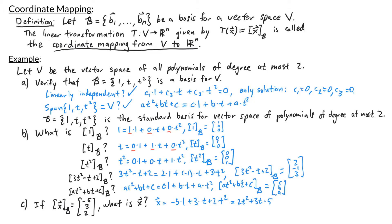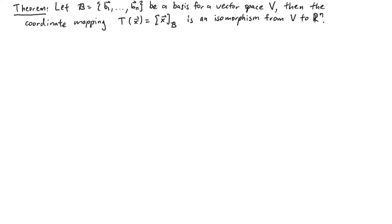Next we'll look at a theorem, but we won't prove it here. The theorem states that if b is a basis for a vector space V consisting of vectors b1 through bn, then the coordinate mapping T(x) = [x]_b is an isomorphism from V to Rn. Essentially, this means V and Rn are equivalent vector spaces, which is very useful since we've worked extensively with vectors in Rn.